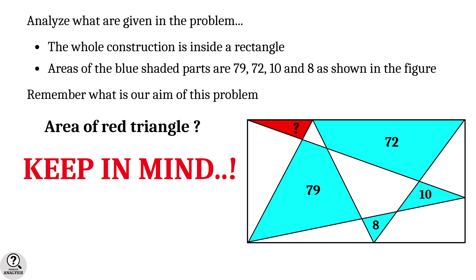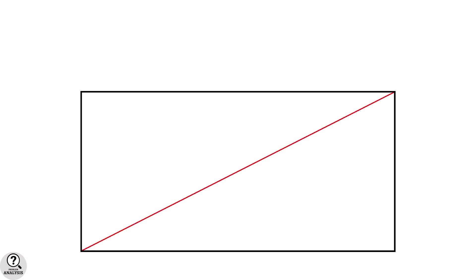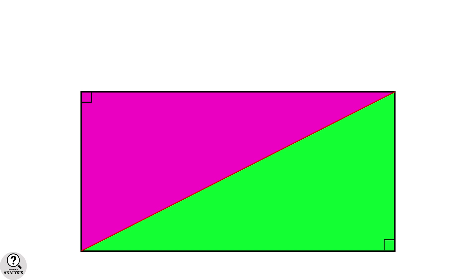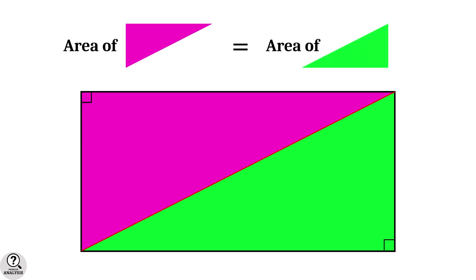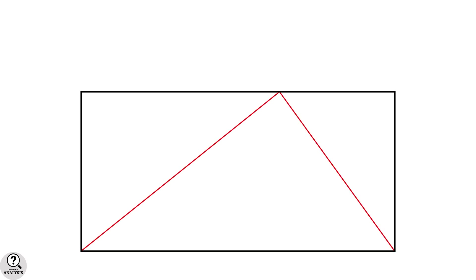We need to note an important property of rectangles. Consider a rectangle — drawing a diagonal cuts it into two equal right triangles. The area of the pink right triangle is the same as the area of the green right triangle. Now, drawing two lines and a vertical line inside the rectangle splits the figure into two pairs of right triangles.